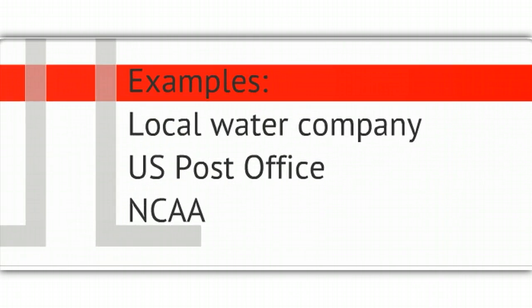Some examples are the local water company. This is an example of a natural monopoly. A natural monopoly exists because there are some industries in which it is actually more efficient, better for the consumer all around for there to be a monopoly, for there to be a single supplier, and water is one of them.